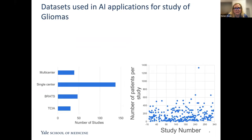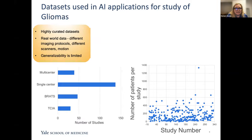What we learned from this giant review — which took over a year — was that not a lot of datasets are available. Most studies were single center, though a large number used available datasets like BRATS and TCIA. The number of patients per study was fairly low for machine learning applications. On top of that, the datasets were highly curated. The real-world data I see in clinical practice — including different imaging protocols, different scanners, and motion — was not widely available, and generalizability to my clinical center was limited.